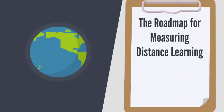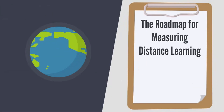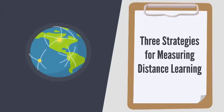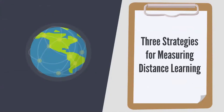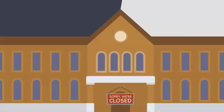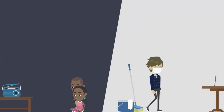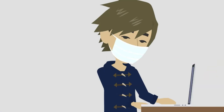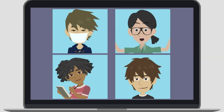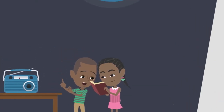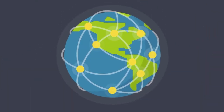The Roadmap for Measuring Distance Learning provides strategies for capturing reach, engagement, and outcomes. This video shares three key strategies and provides an example of how to apply them to one distance learning modality: video programming. As countries closed learning institutions in response to COVID-19, there was a surge in distance learning initiatives. Distance learning is commonly used to reach learners who need flexible learning opportunities, such as working youth or where schools cannot be safely reached.